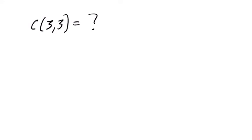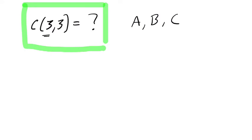So in this video, let's discuss what this means and what it has to equal and how we can prove it. This is saying, if you have three objects in your set, let's say we have three letters A, B, and C, and you're choosing all three of them, how many ways can you do that? That's what this is asking.